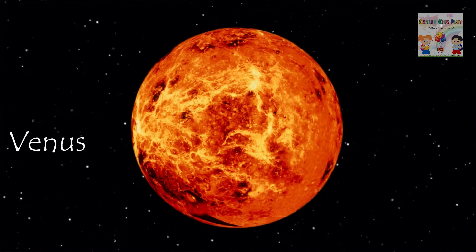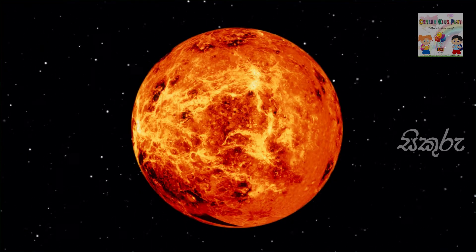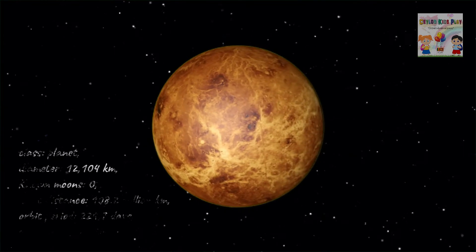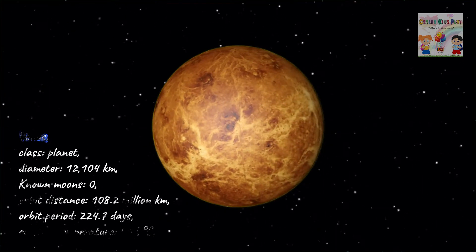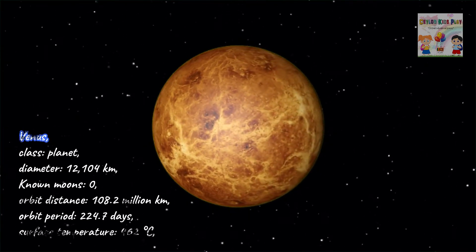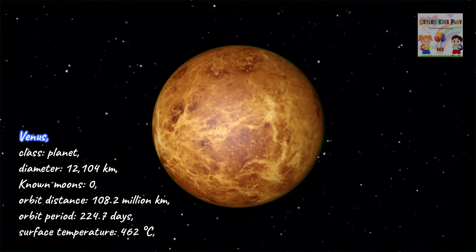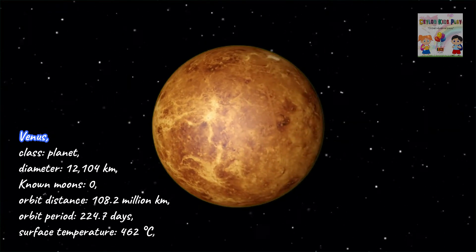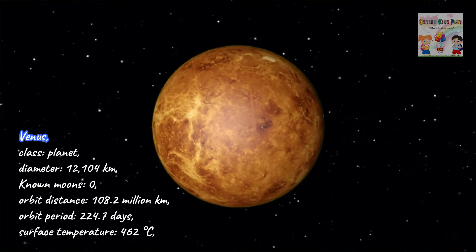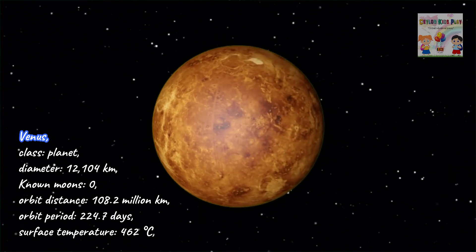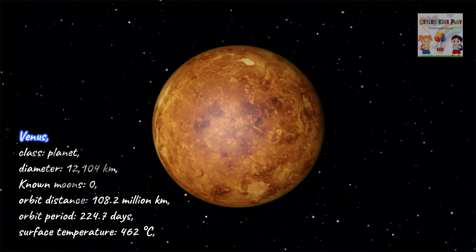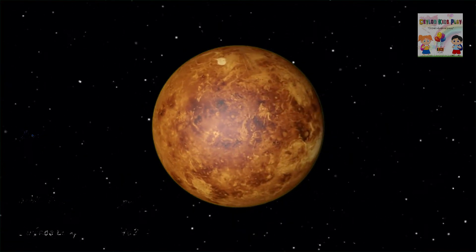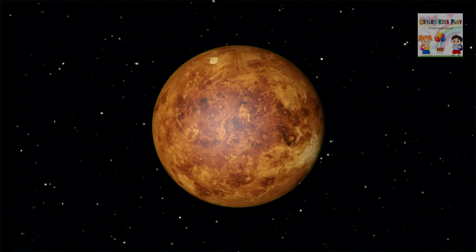Venus. Venus, class: planet. Diameter: 12,104 km. Known moons: zero. Orbit distance: 108.2 million km. Orbit period: 224.7 days. Surface temperature: 462 degrees Celsius.